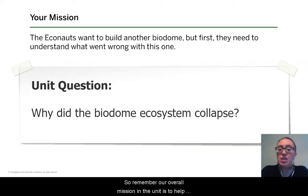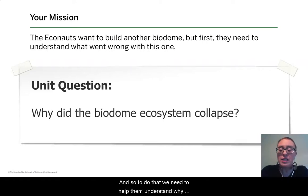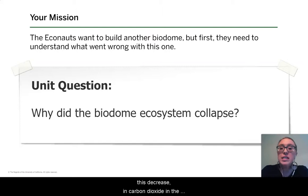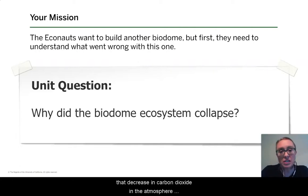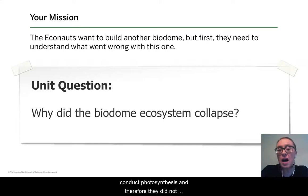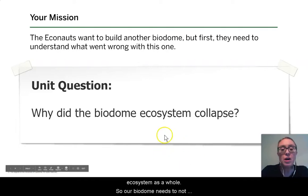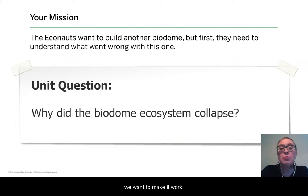Our overall mission is to help our Econauts build a better biodome. To do that, we need to help them understand why this biodome ecosystem collapsed. This decrease in carbon dioxide in the atmosphere is really important to understand, because it caused our producers to not efficiently conduct photosynthesis, and therefore they did not produce enough energy storage molecules for the ecosystem as a whole. Our biodome needs to avoid this reduction in carbon dioxide if we want it to work.